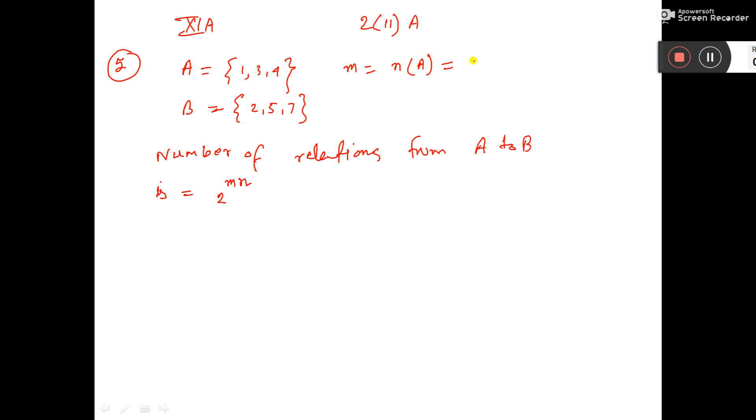So, how many? 1 to 3. And n is equal to what? The cardinal number of set B. How many elements are there? 3.